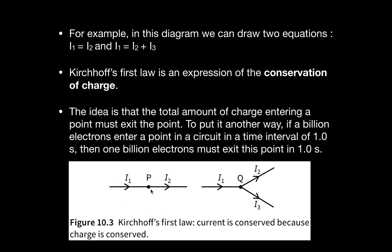Here is an example — a series circuit where there is a point P marked with I1 and I2, but there is no splitting at point P. However, there is a point Q where the wire distributes into two parts. At point P, I1 is equal to I2, but at point Q, I1 is equal to I2 plus I3.